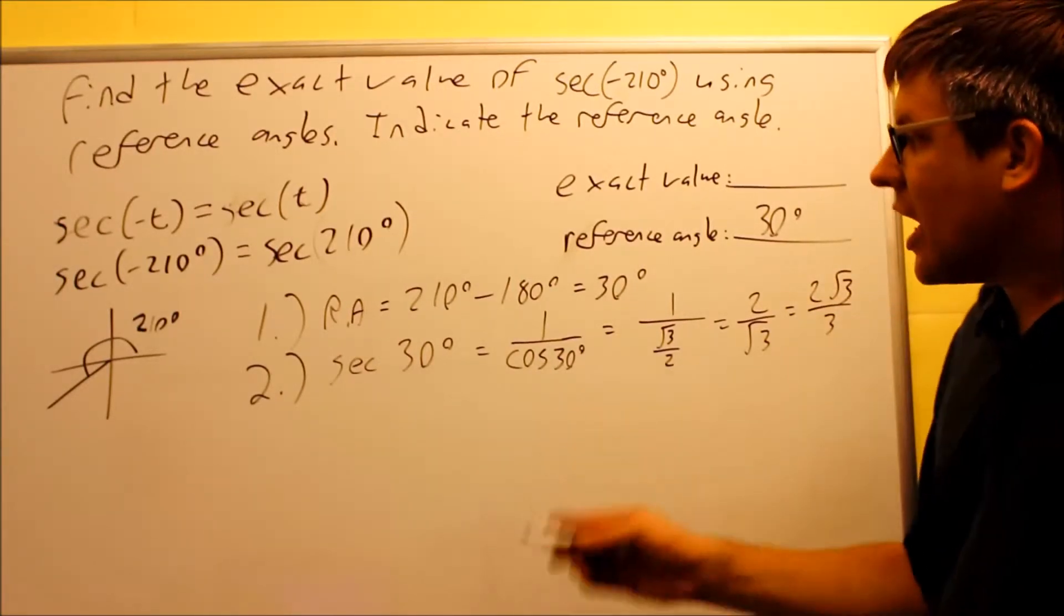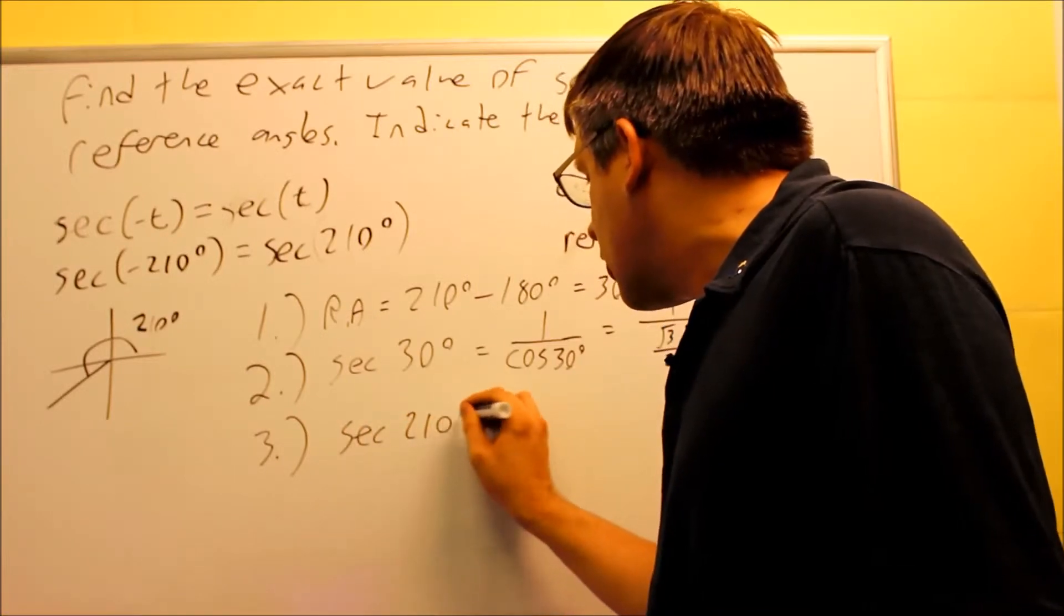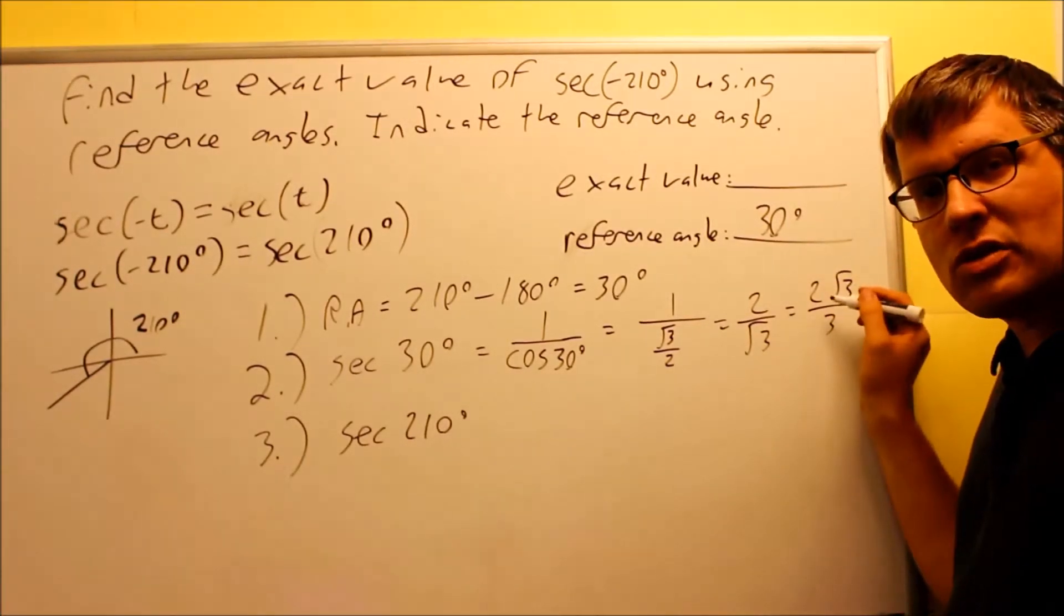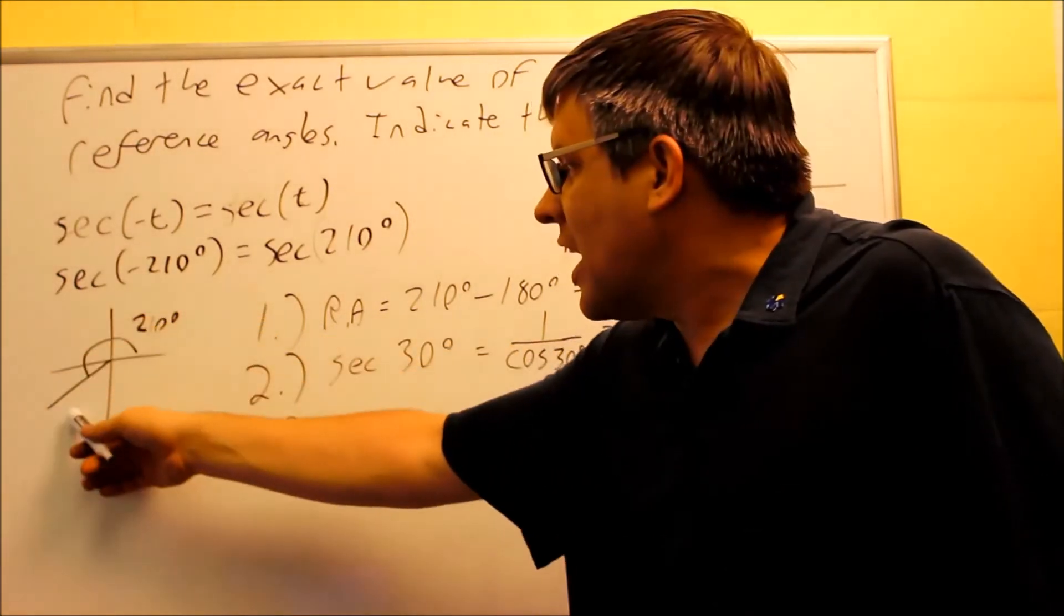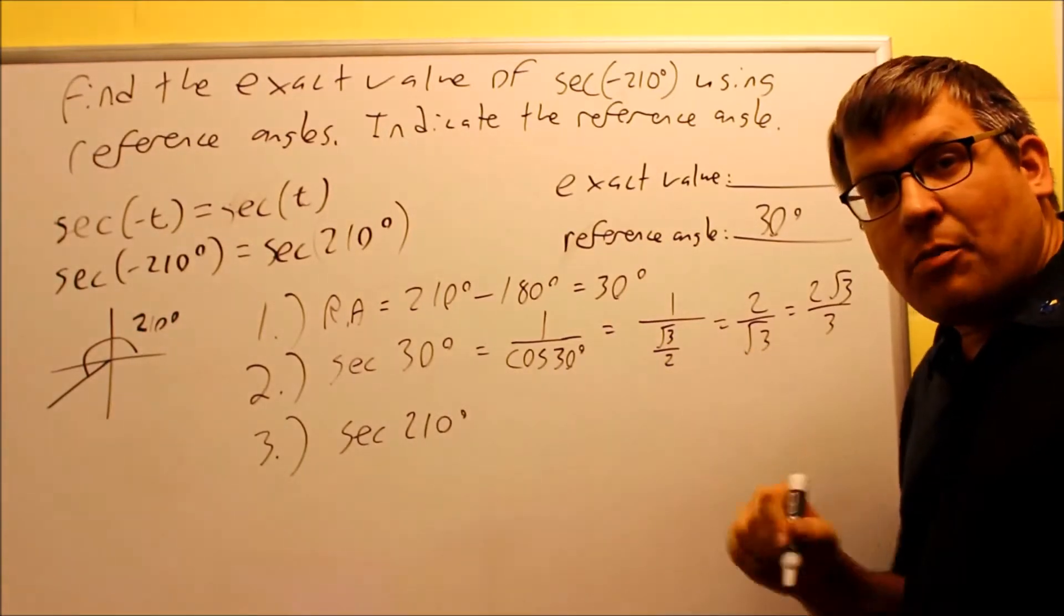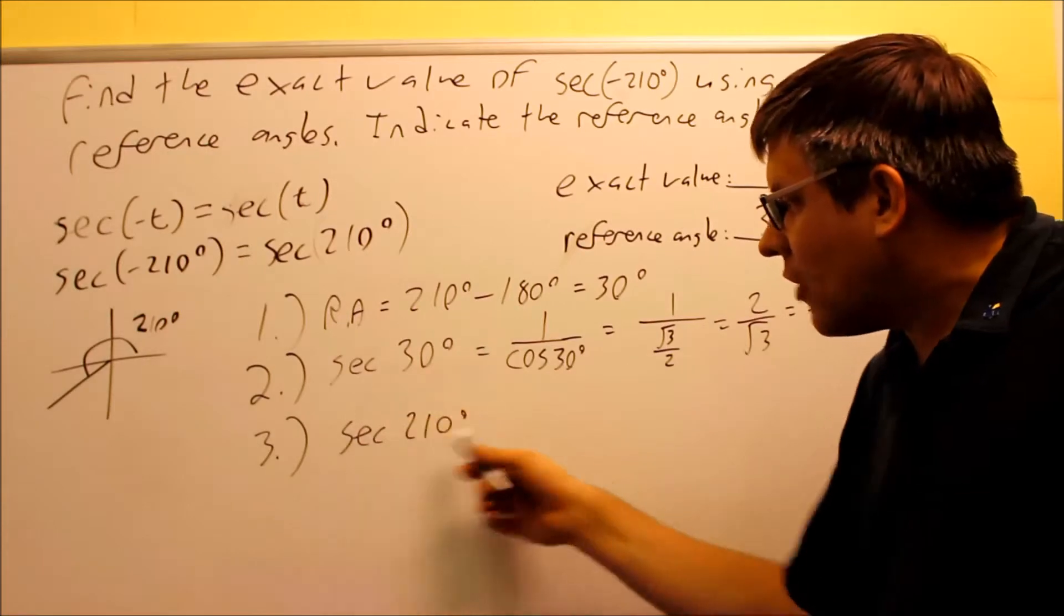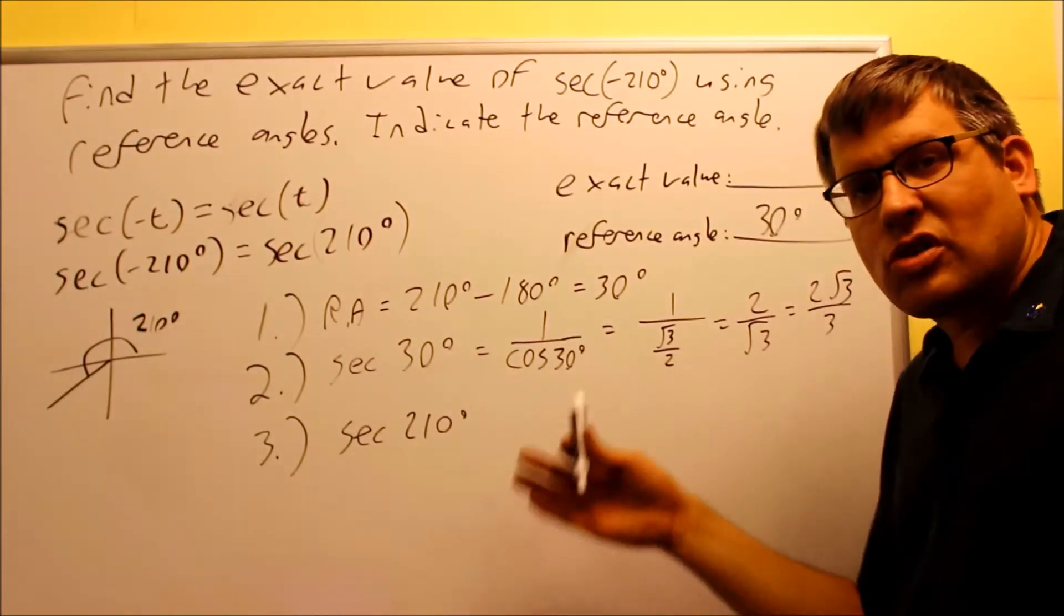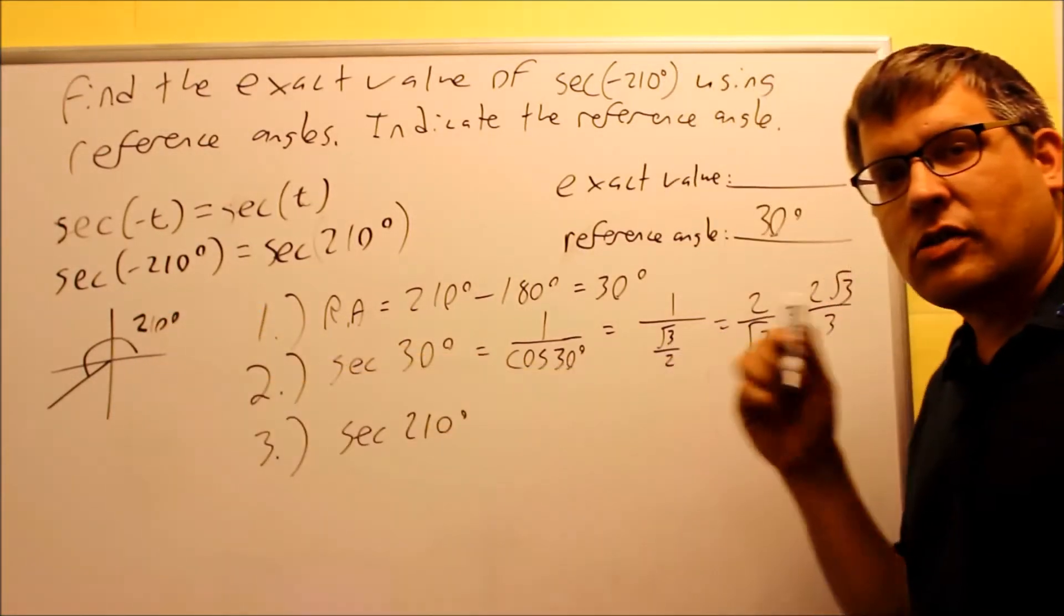This right here would be the exact value if the problem was just written as secant 30. For step number 3, I really am working with secant 210 though. I'm not working with 30, I'm working really with secant 210. So in step 3, you have to apply the appropriate sign. It'll have the same numerical value as this, but I have to decide whether I need to add a minus sign or not to it. I'm in the third quadrant. If I do all students take calculus, all students take. That means that t represents tangent. Tangent would be the only one positive in the third quadrant. That means everything else is going to be negative. So that means that both sine and cosine would be negative in the third quadrant. The same sign that you have for cosine is also the same sign you're going to have for the secant. So if cosine is negative in the third quadrant, that means that secant also has to be negative in the third quadrant. Those go together. Just like sine and cosecant, those go together. And cotangent and tangent, those have the same sign also. So that's how you can use your all students take calculus sign chart to do that.